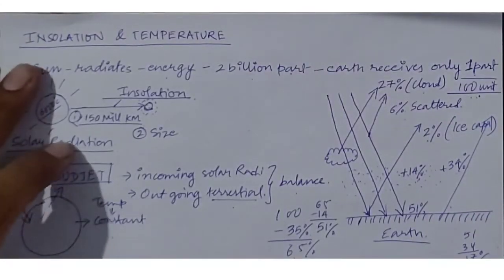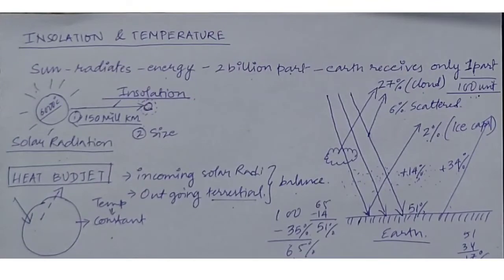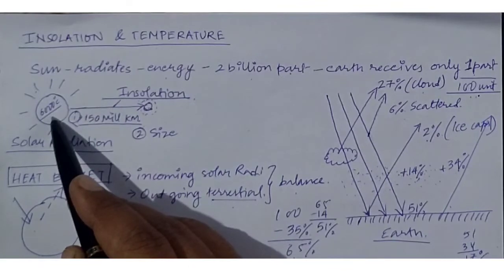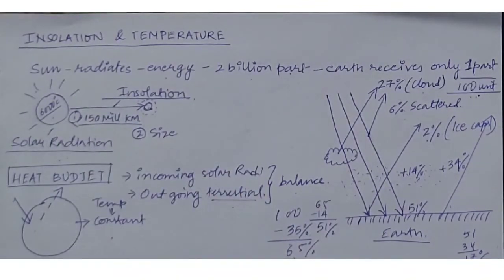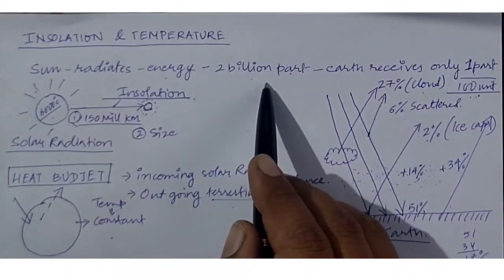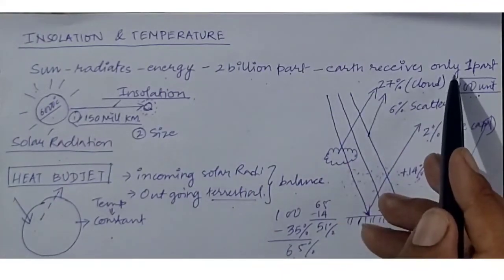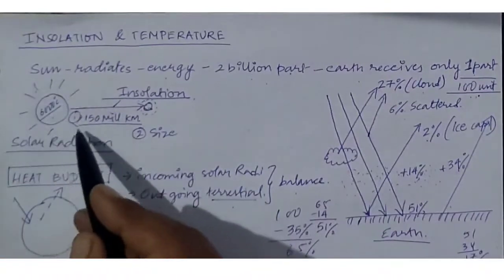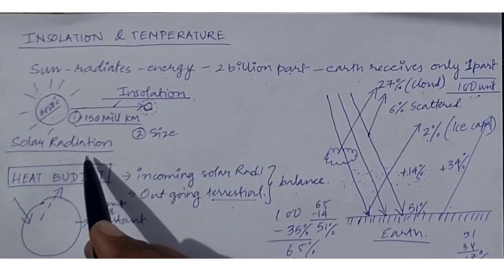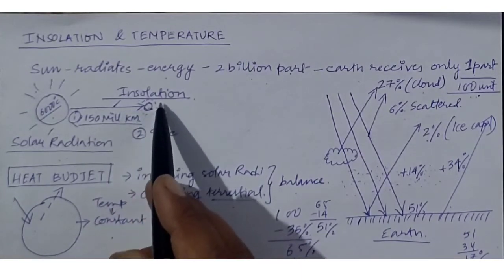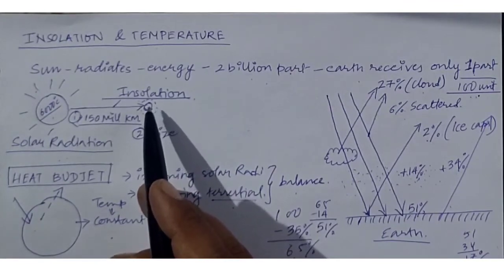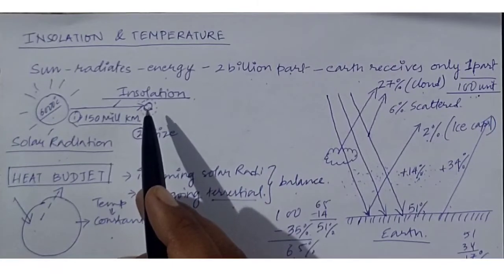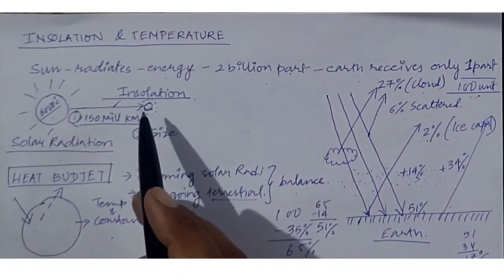Today we are going to start the chapter on insolation and temperature. We all know that we receive energy from the sun. The sun is actually a spherical mass of hot gases whose surface temperature is about 6000 degrees Celsius, so it radiates a huge amount of energy. The energy radiated from the sun is called solar radiation, and the part which we receive on Earth is called insolation. As defined, radiated energy from the sun that strikes the Earth's surface is known as insolation.